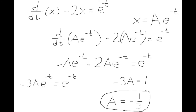Next, I rewrote the differential equation, and then assumed that x in this part was e to the power of negative t multiplied by a constant a, because e to the power of negative t is the only function of t that we can see here. Once I plugged that in for x, I found that the constant a equals negative one-third.